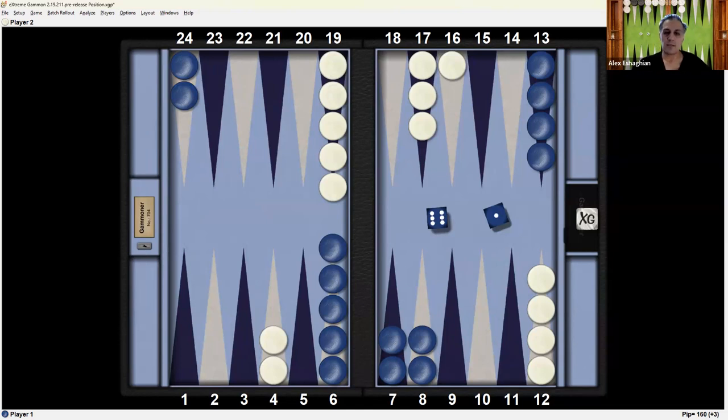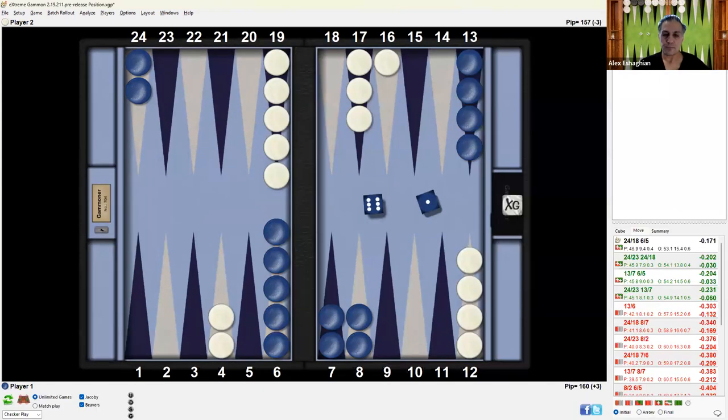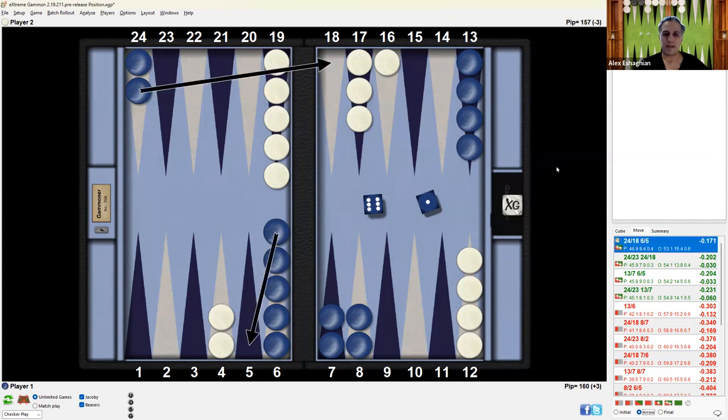Okay, so let's look at the analysis. Here, it turns out that the best play is to split the back checkers with 24 to 18 and slot the 5 point like this. And that results in this position.